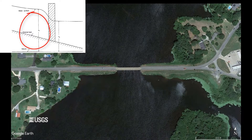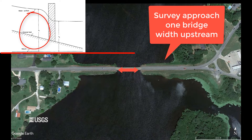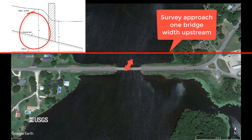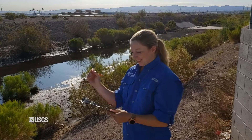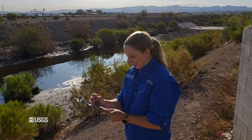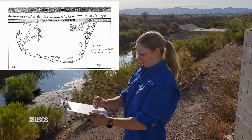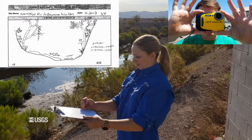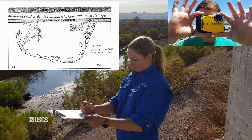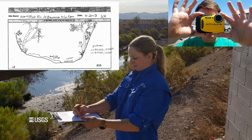The approach cross section is normally surveyed one bridge width upstream and is used to represent the natural, unobstructed flow in the channel. One bridge width was adopted because it is usually far enough upstream that you are no longer in the drawdown zone. While surveying, be sure to make a sight sketch, take pictures, and describe the roughness throughout the section just as you would with a slope area indirect measurement.